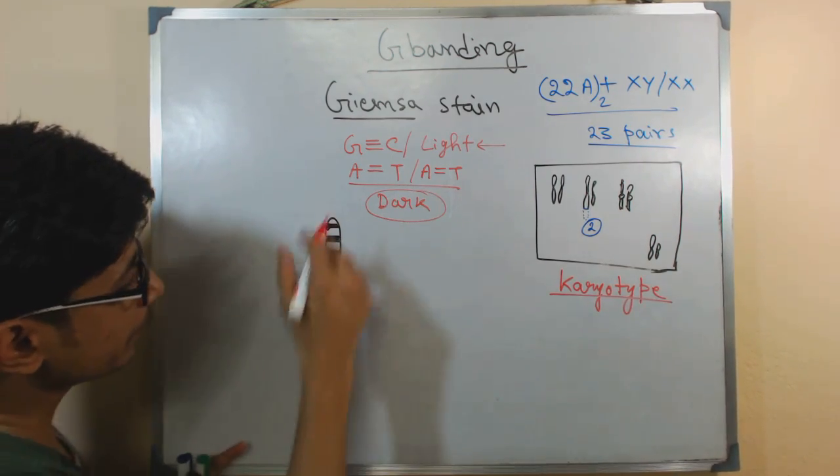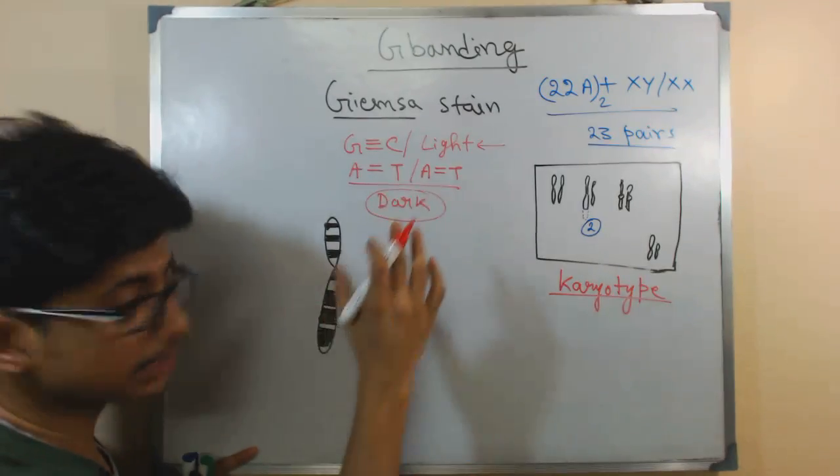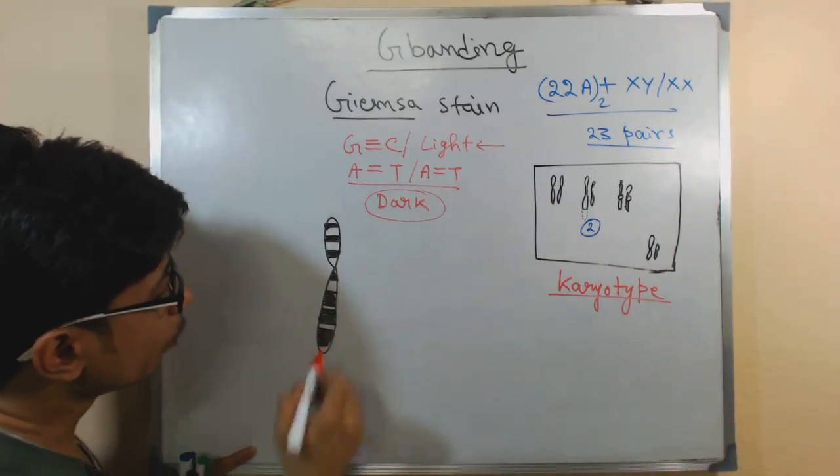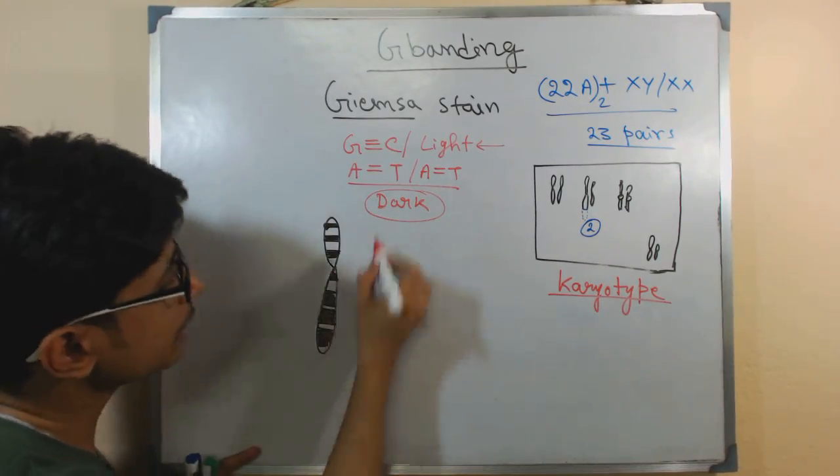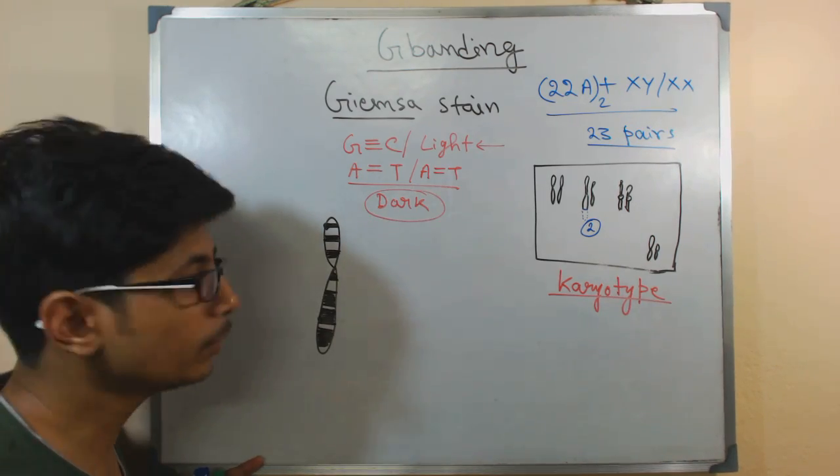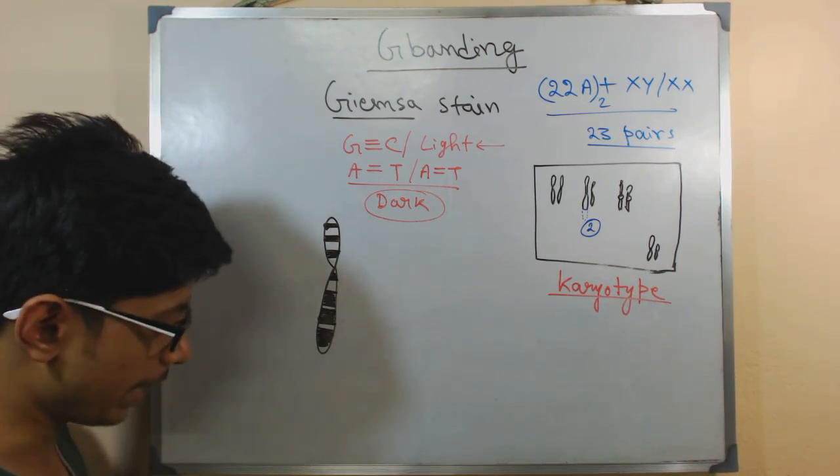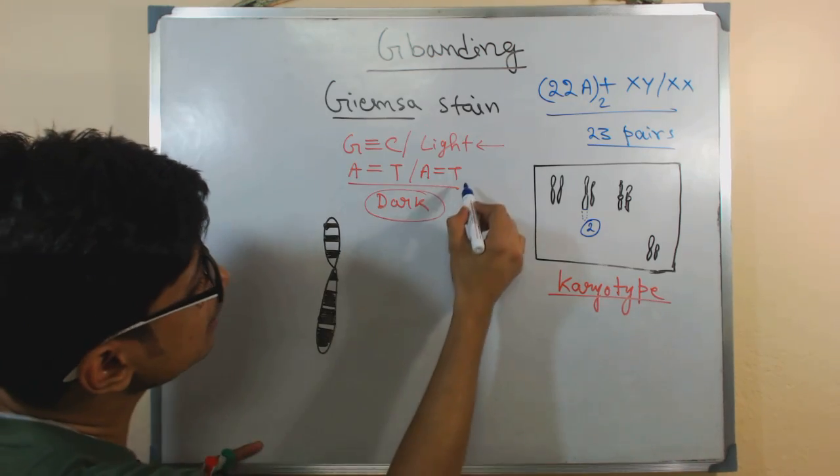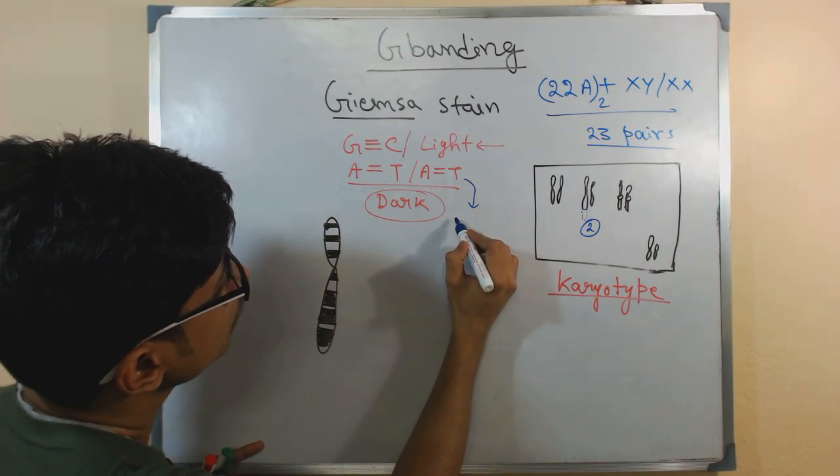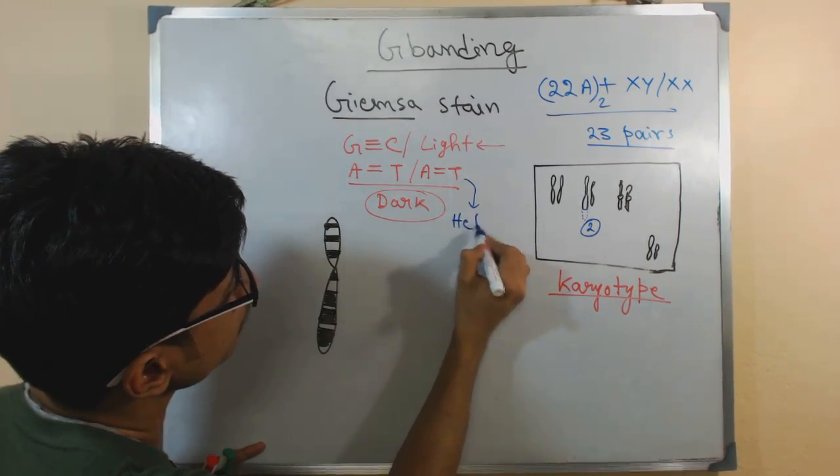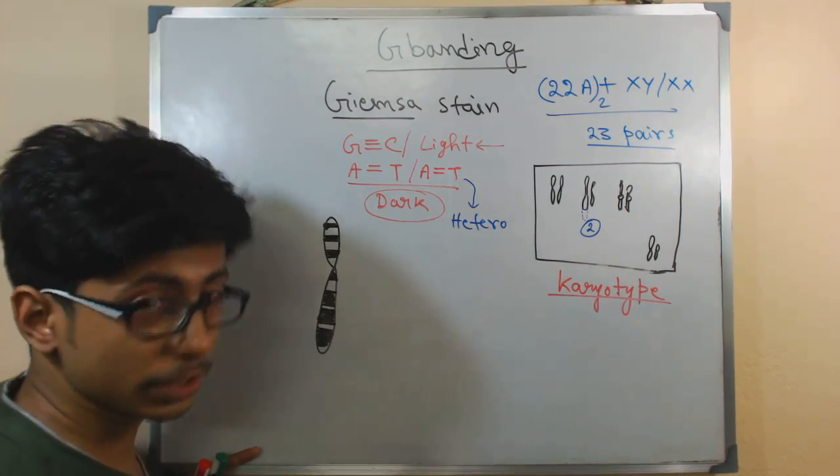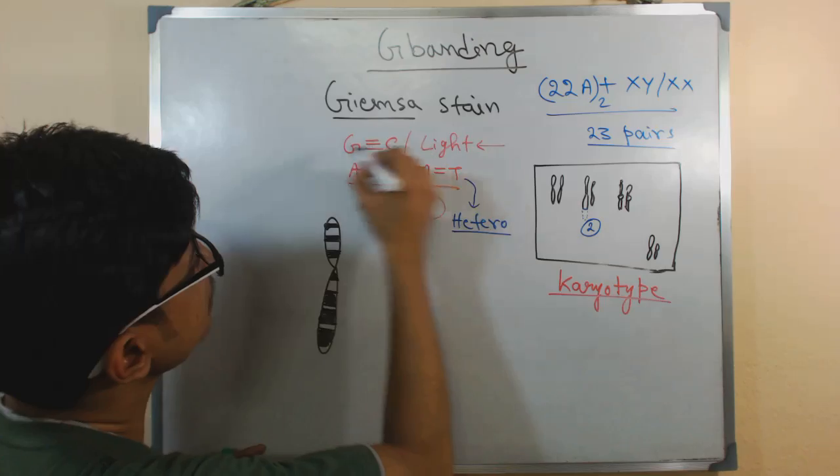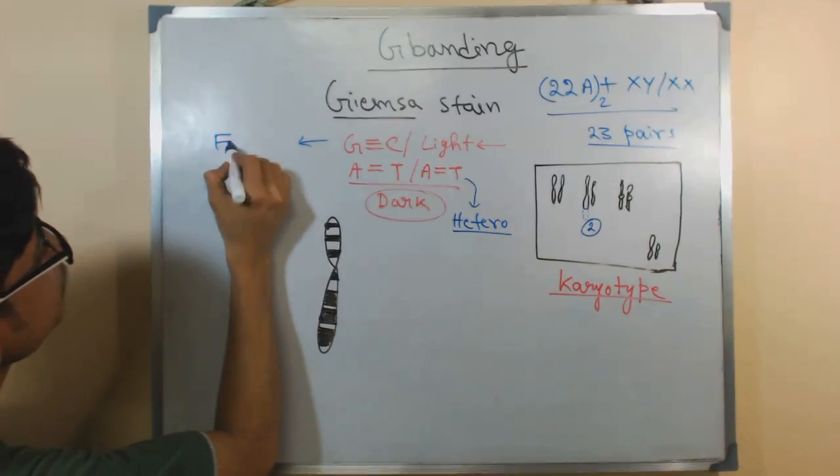If you look at here, these dark segments are AT-rich. Now most of the dark segments which are AT-rich, if you look at the statistical input you will find this idea that these AT-rich segments are more of a heterochromatin region, and these GC-rich segments are more of a euchromatin region.